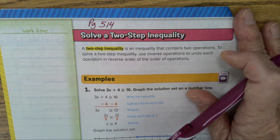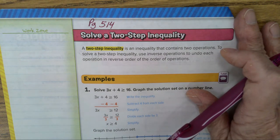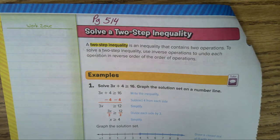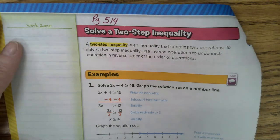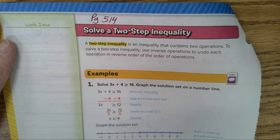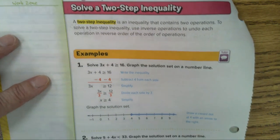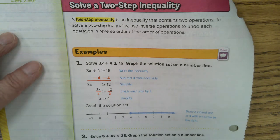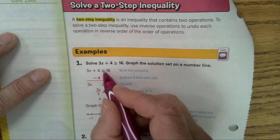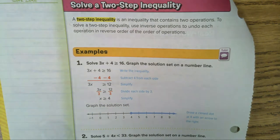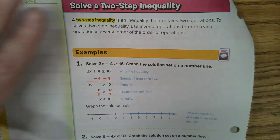Page 514, solve a two-step inequality. Your book should be open now to page 514. A two-step inequality is an inequality that contains two operations. To solve a two-step inequality, use inverse operations to undo each operation. It looks just like two-step equations except you don't have an equal sign, you have an inequality sign. And when you multiply or divide by a negative number, your inequality sign is going to flip.